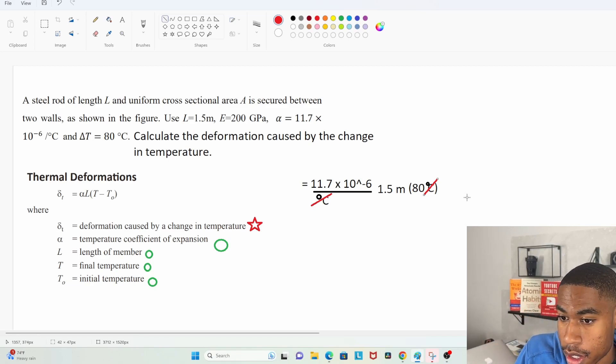The deformation is going to be a change in the rod's length, like how much it changes because of the temperature. So we want a really small deformation because we don't want our rod just to melt and become very short, right? Because it's in between two walls and I'm sure it's holding up something. All right.